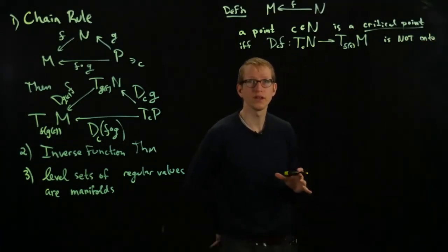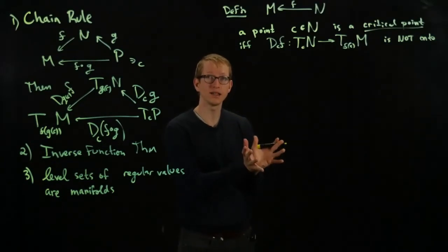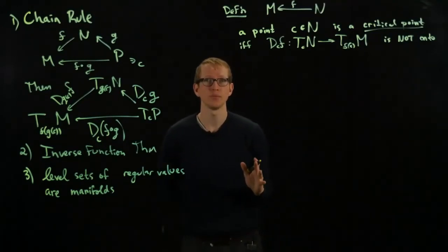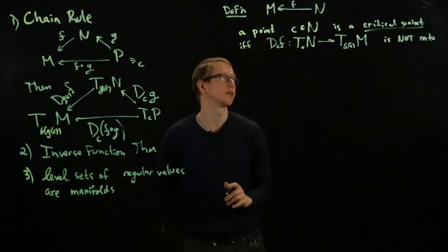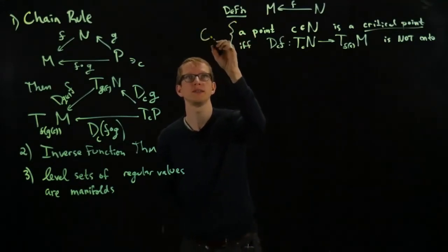So if the span of the image of all of these vectors does not equal the tangent space of the manifold M at that point, then that point is said to be a critical point. And the set of critical points are denoted by C_F.